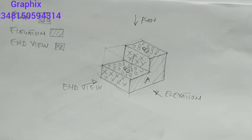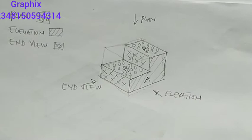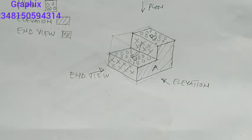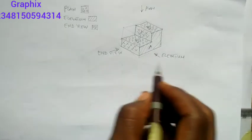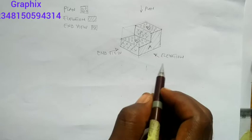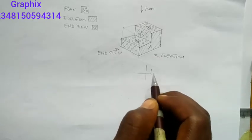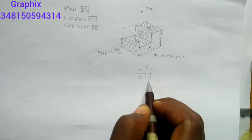Now what I want you to understand is the way views are arranged — this is the most important aspect of orthographic projection. If you can remember what is called our quadrant: in our quadrant we have first quadrant, second quadrant, third quadrant, and fourth quadrant.